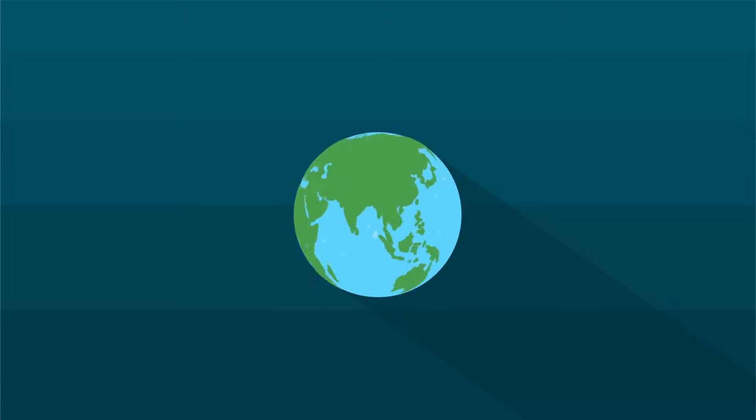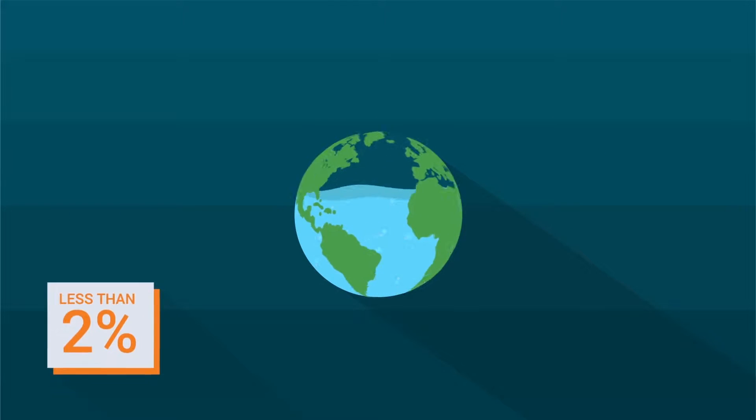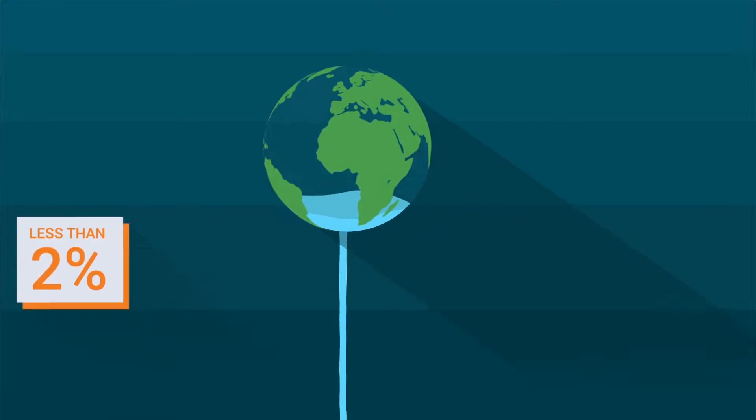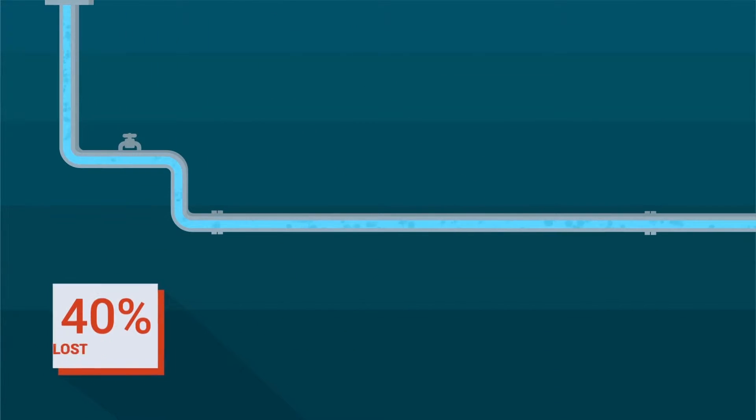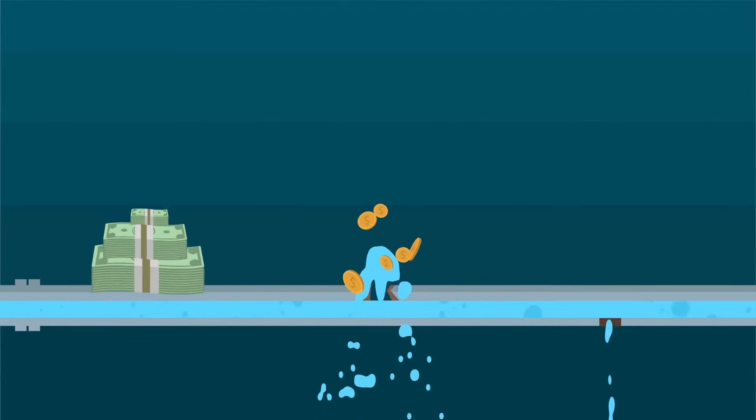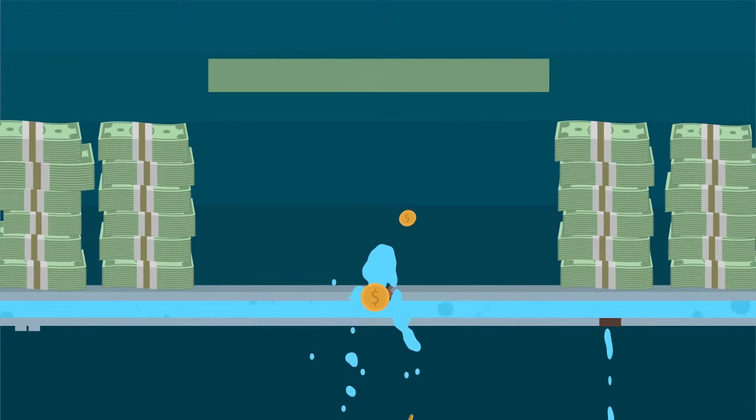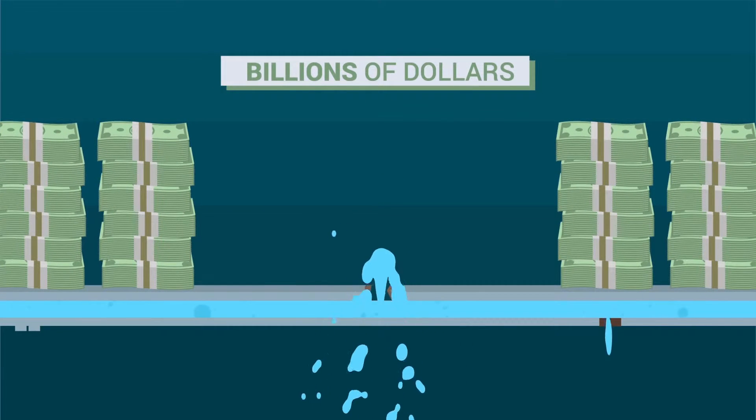70% of our planet is water. Only less than 2% is available for drinking. And 40% of it is lost through leakage, poor maintenance, and pipe bursts. The amount of water lost is enormous, costing utilities billions of dollars.